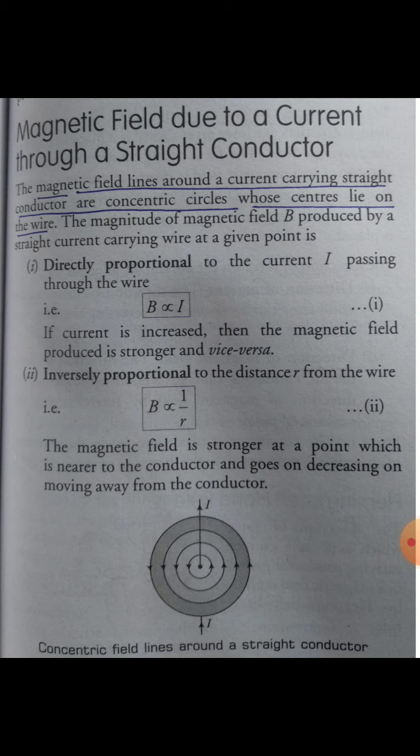Magnetic field is a vector quantity and the SI unit of magnetic field is tesla. We have already understood magnetic field lines — these are imaginary lines which go from the north pole of the magnet towards the south pole when we are talking about bar magnets.